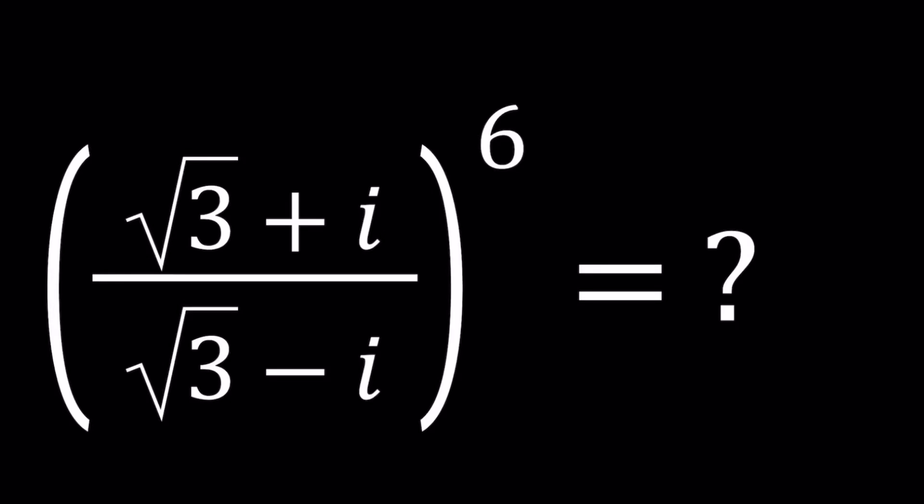Hello everyone. Welcome to a plus b i. This channel is all about complex numbers and in this video we're going to be evaluating a rational expression. We have square root of 3 plus i divided by square root of 3 minus i to the 6th power. I'll be presenting at least three methods even though one of them is going to be incomplete but I know you can do the rest.